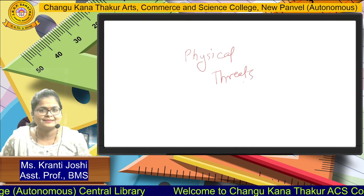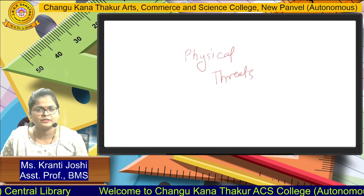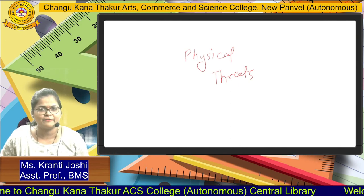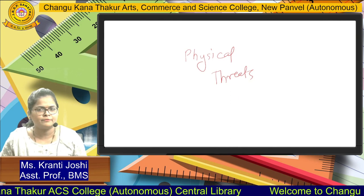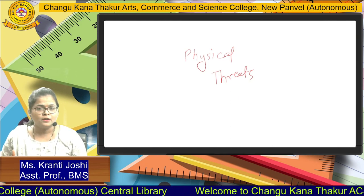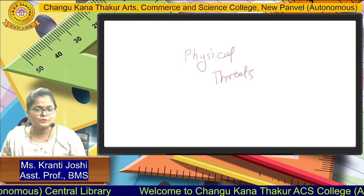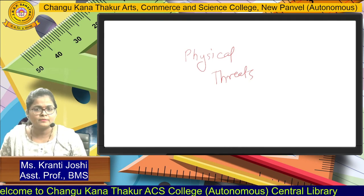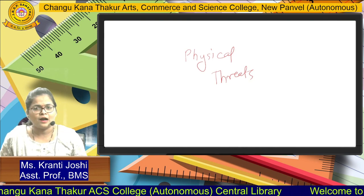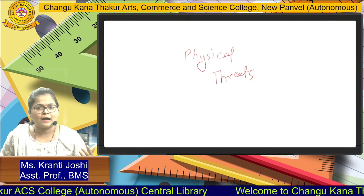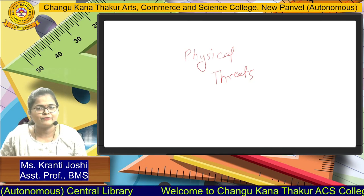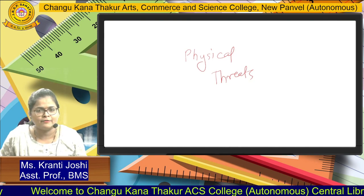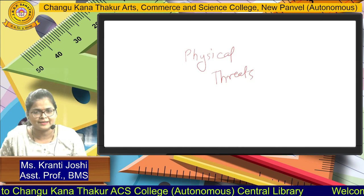Physical threats are threats directly to hardware devices, which include computer CPUs, networks, and various hardware devices. There are two types of physical threats: natural threats and man-made threats. Natural threats include disasters such as floods and fire, which can cause physical damage to computer systems. Man-made threats involve a person intentionally causing harm — such as stealing data from systems or breaking computer hardware. So these are the two types of IT threats: physical threats and non-physical threats, which are logical threats. Thank you.